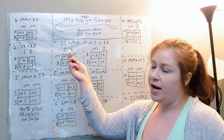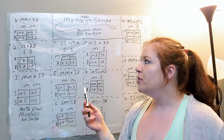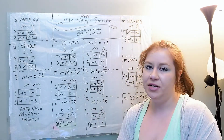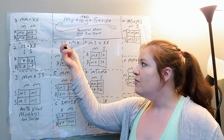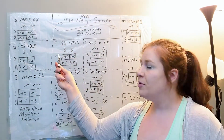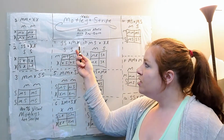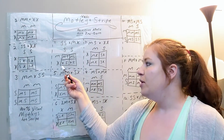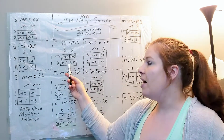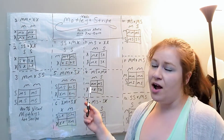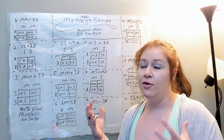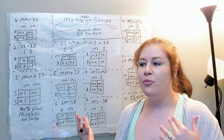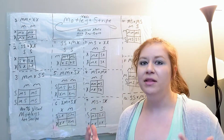The next pairing is a visual Stripe to a normal Het for Motley. When you have a homozygous Stripe, all of the babies are at least going to be Het Stripe. Since you also have a Het Motley, half the babies are going to be Het Motley as well and half will not. So you end up with half normals that are Het for Stripe and half Motleys that are Het for Stripe, because when Motley and Stripe show up together they will be visually Motley and just carry the Stripe gene. If you get Motleys out of a Stripe pairing, label them as Motley Het Stripe.